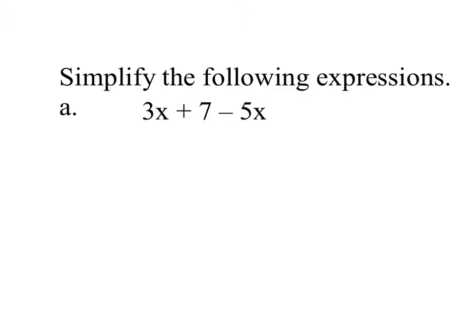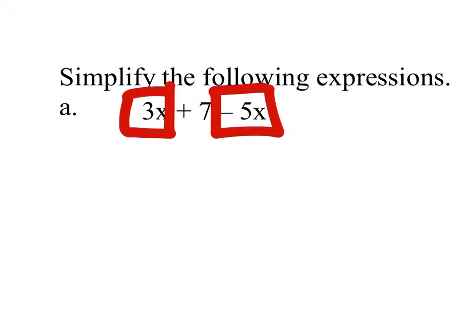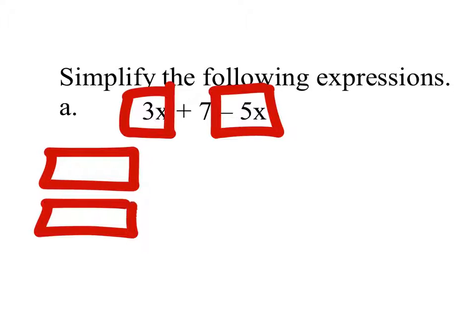So, 2a — this one we're combining like terms. So if we look at this, we've got a 3x and a negative 5x, which, if we use a model, would have 3 x's right of count.